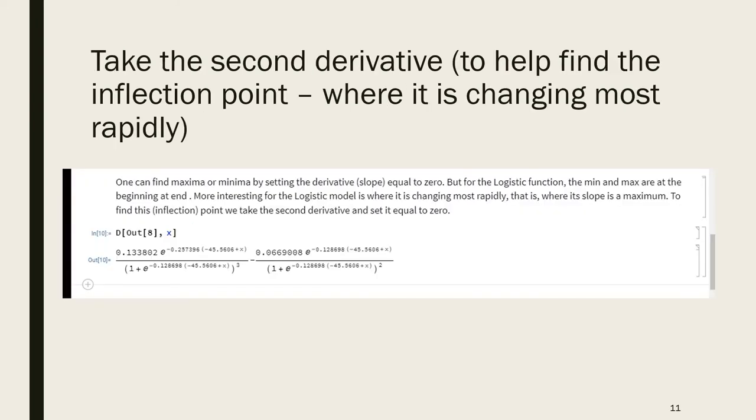In calculus, one finds the maxima or minima by taking a derivative and setting it equal to zero to solve. For the logistic function, the maximum and minimum are pretty boring - a minimum at the beginning and a maximum at the end. More interesting for the logistic model is where it is changing most rapidly, or where its slope is a maximum. If we want to find this inflection point, we must take the second derivative - the derivative of the derivative. That's what we're doing here.